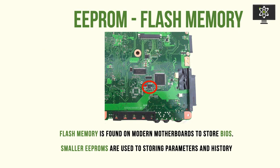EEPROM is the most commonly found type in industry. It's found on modern motherboards mainly to store BIOS, because BIOS needs to be accessed quickly and effectively. However, because it's stored on flash memory, it can't be used to store things requiring more granular and smaller updates such as parameters and history. As a result, flash memory is only used to store BIOS for booting, and smaller EEPROMs are used to store parameters and history. There are two types of EEPROM — flash memory and smaller EEPROMs — and you need to understand how these differ and where you find them.